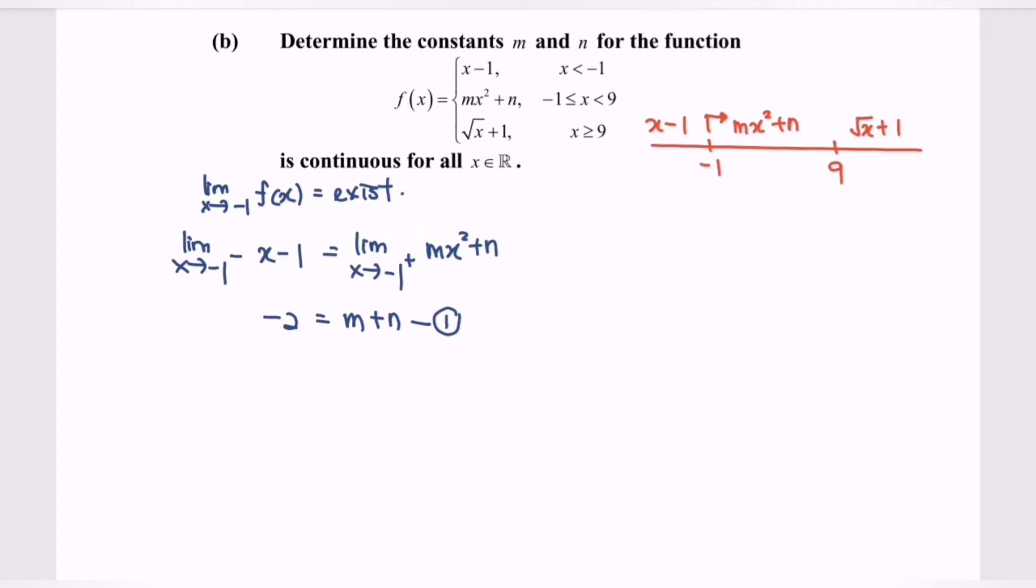Next, we are going to focus on 9. The limit when x approaching 9 for the function f(x) also exists because the question states that the function is continuous for all values of x.